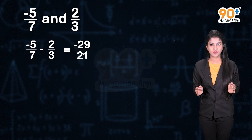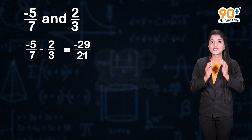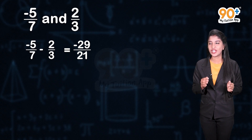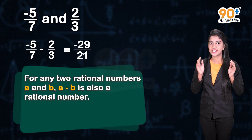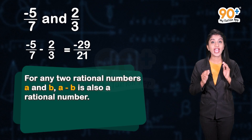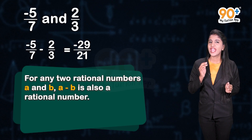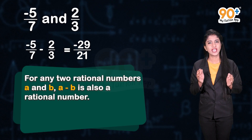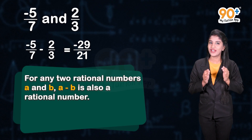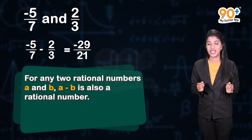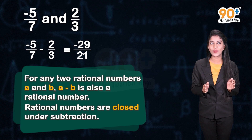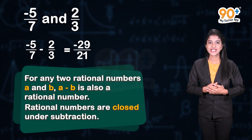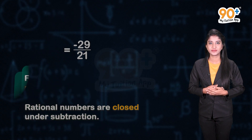The result, minus 29 divided by 21, is a rational number. So in general, for any two rational numbers a and b, a minus b is also a rational number. Thus, rational numbers are closed under subtraction.